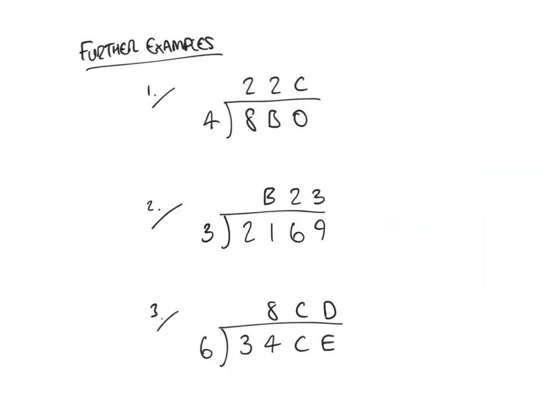Here are some more examples already worked out for extra practice — see whether you get the same results. We have 8B0 divided by 4, 2169 divided by 3, and 34CE divided by 6. In questions 2 and 3 you'll notice a gap where the first division has an integer result of 0 — for instance, 3 doesn't go into 2 any times, so you could write a 0 there. Hopefully these will be useful for a bit of extra practice.